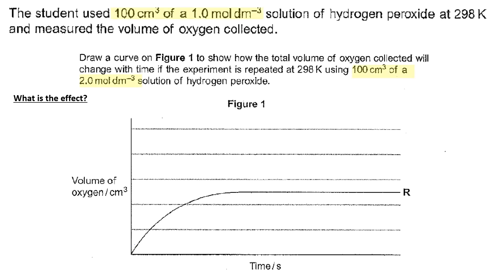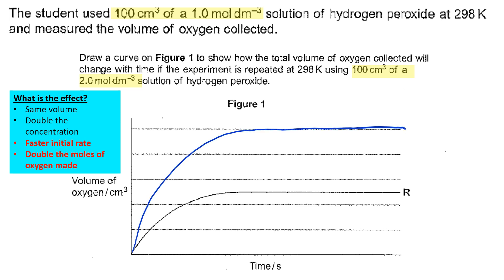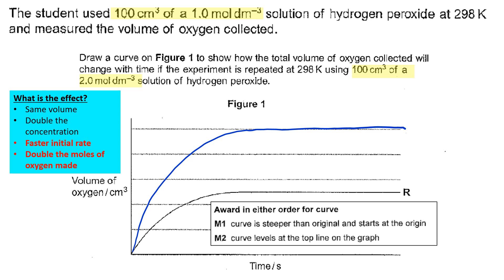The first thing to think about is what changes. The volume stays the same, but the number of moles doubles because the concentration is multiplied by 2. So the effect of this is that you get a faster initial rate and double the moles of oxygen made. You need to draw a curve that is steeper than the original and starts at the origin and it levels off at the top line on the graph.